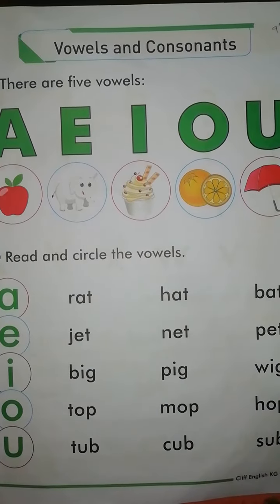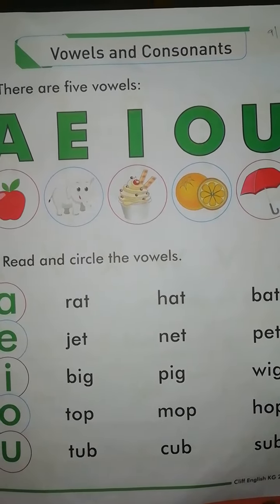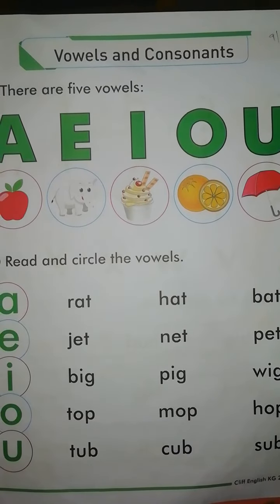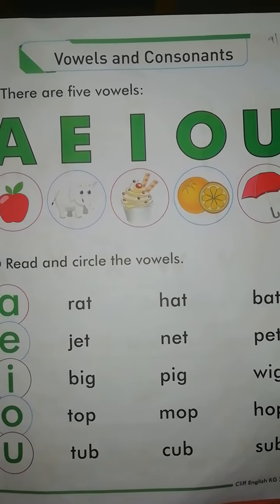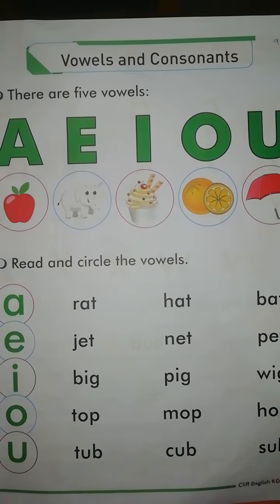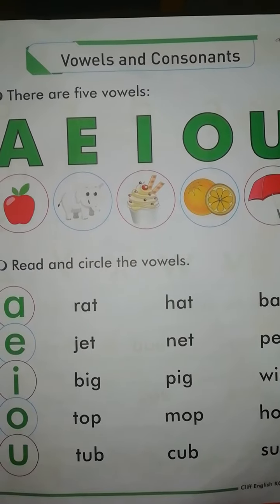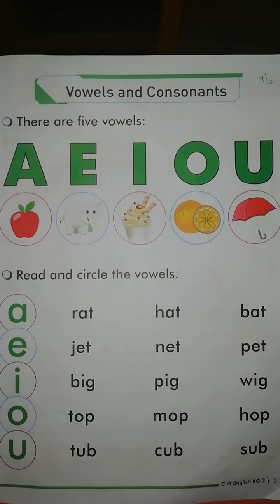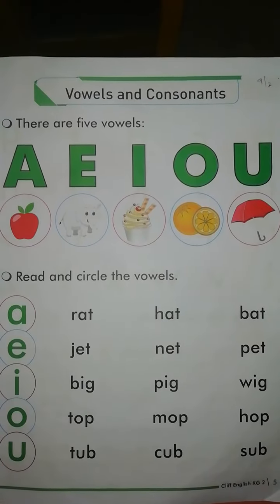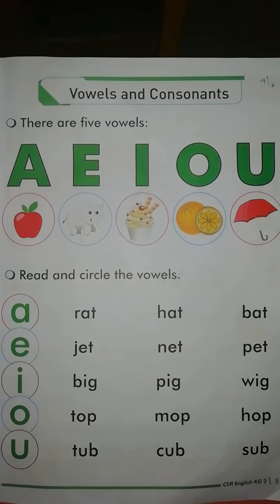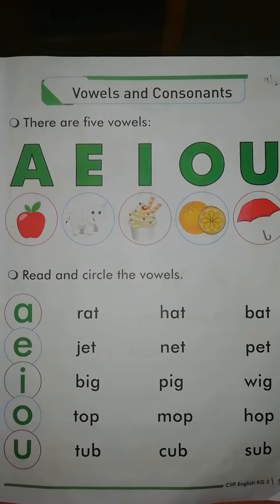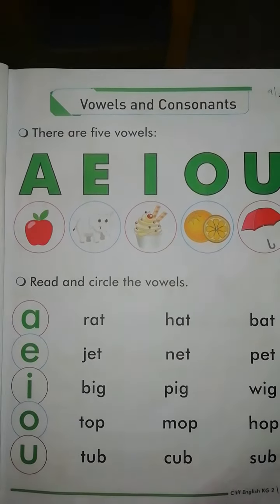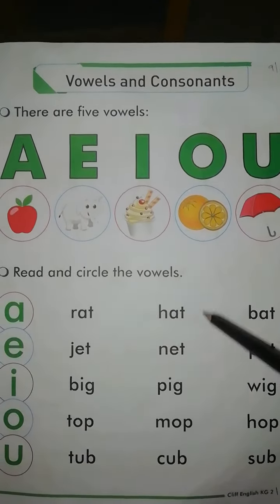Do you know kids how many alphabets are there in the English language? There are 26 alphabets. We divide them into two types due to their sounds, and we give them two names, two groups. We call one group vowels, and there are 5 vowels.